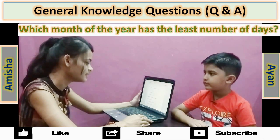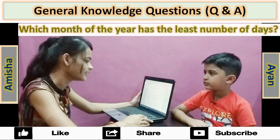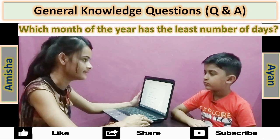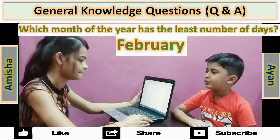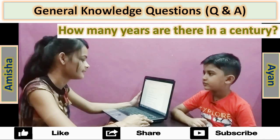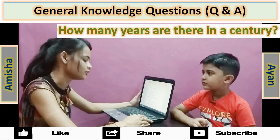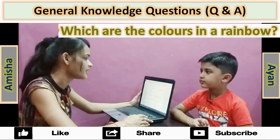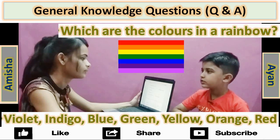Which months of the year has the least number of days? February. How many years are there in a century? 100. Which are the colors in a rainbow?